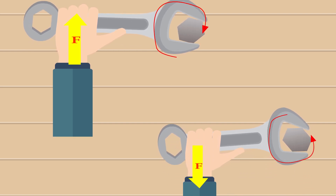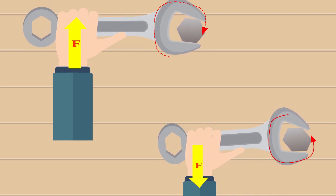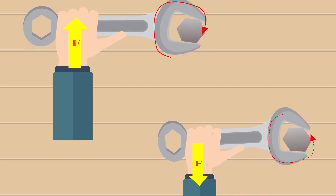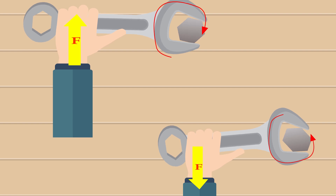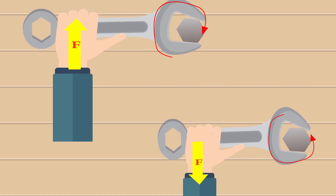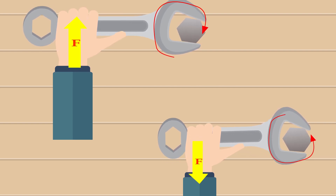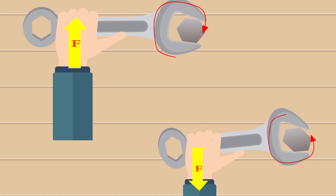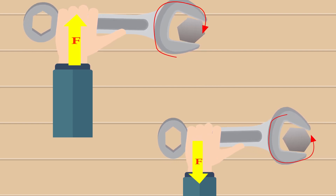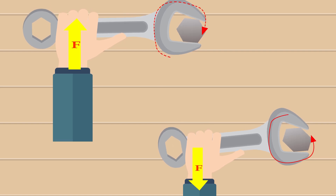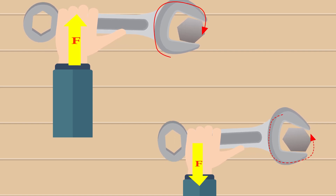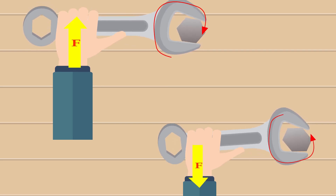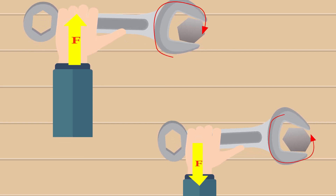To loosen a nut, the force is applied such that it turns the nut in the anticlockwise direction. The torque or movement of the force so produced is called anticlockwise movement.